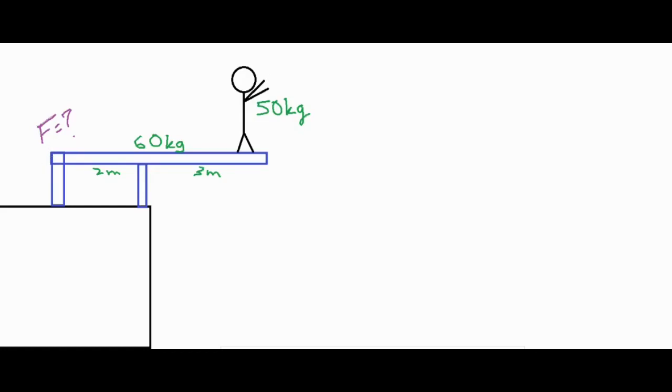So first of all when we're analyzing our diving board we have a pivot point that would be right over here and we're going to measure all of our lever arms, our distances from that orange x right there.